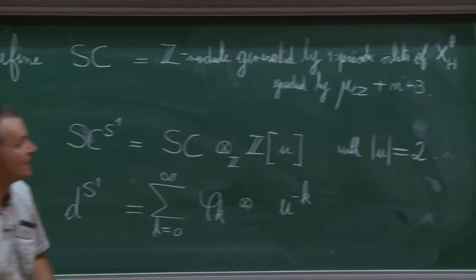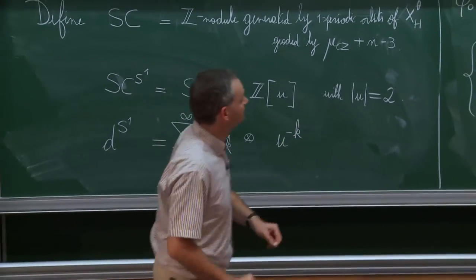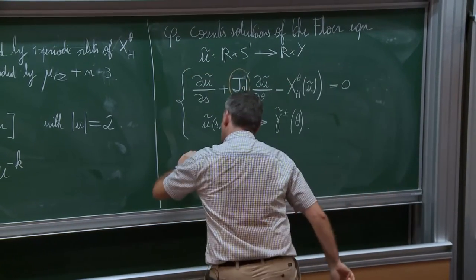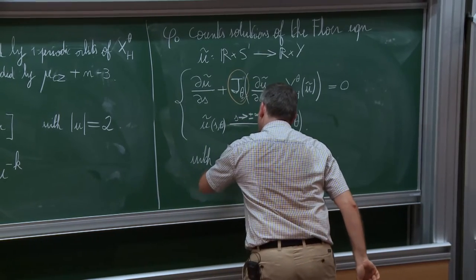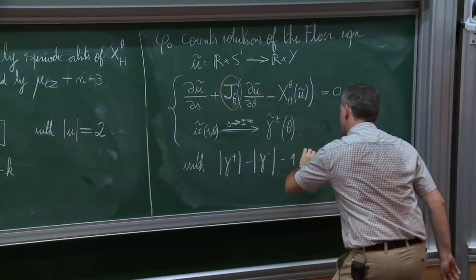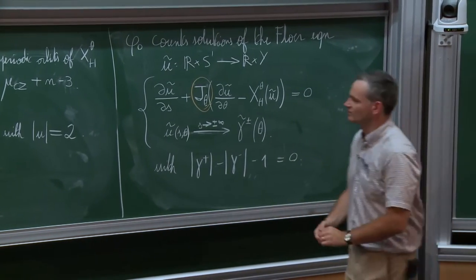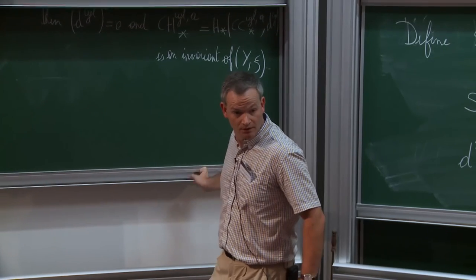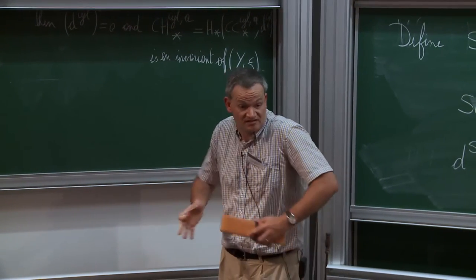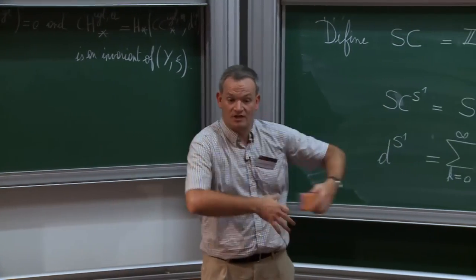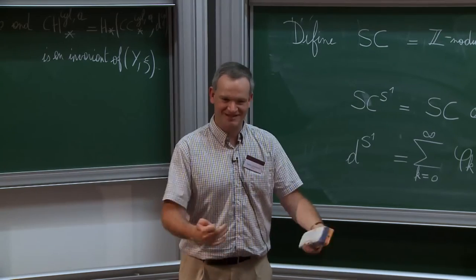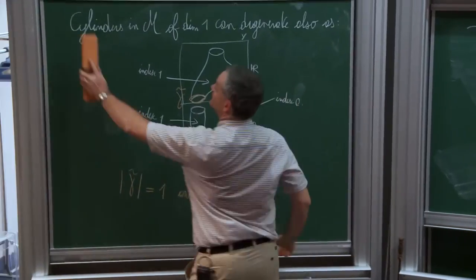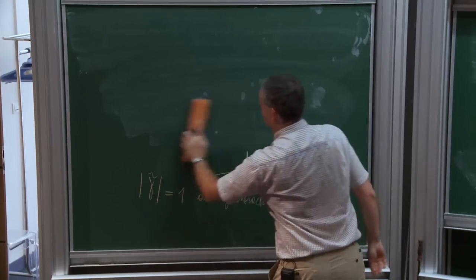The index difference is one: the guys counted by φ_0 correspond to the case where |γ⁺| − |γ⁻| − 1 = 0. Now, φ_k counts not just maps ũ, but tuples composed of such maps and also parameters τ̄ and L̄, where τ̄ lives in (S¹)^k while L̄ lives in (ℝ₊)^{k−1}. These are solutions of a Floer-type equation where both the almost complex structure and the Hamiltonian vector field also depend on the variable s.